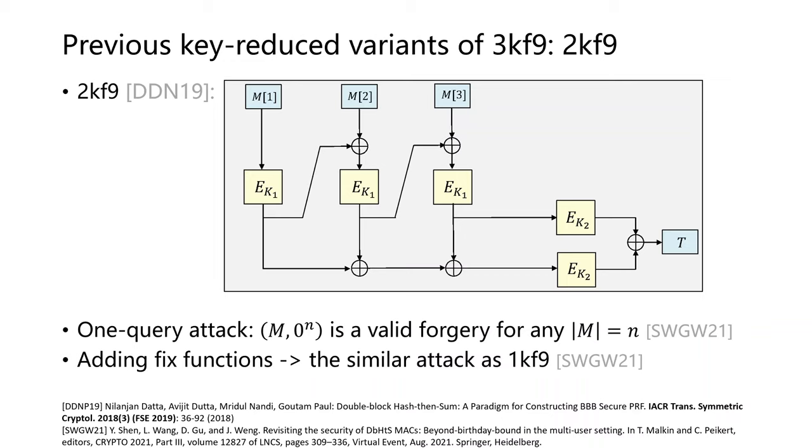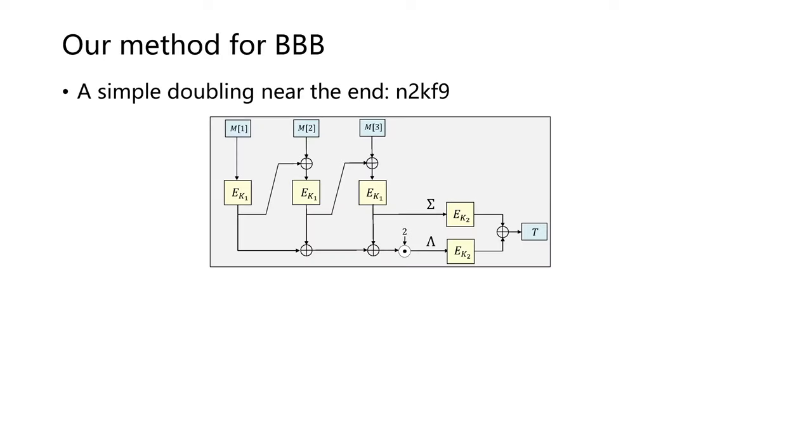In this work, we revisit previous constructions of key-reduced variants of 3kf9 and analyze what went wrong in security analyses. Interestingly, we find that a single doubling at the end can not only fix 2kf9 to achieve beyond-birthday-bound security, but also enable 1kf9 to achieve beyond-birthday-bound security.